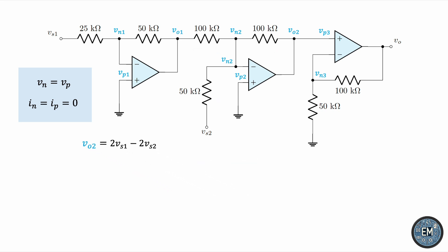Finally, for OPAM3, notice that VP3 is exactly equal to V02 because the output of the second amplifier is connected to the positive input of the third amplifier with just a wire. But we just calculated V02 from the second stage of the analysis, so VP3 must be this 2Vs1 minus 2Vs2. By the first constraint, this must be VN3.